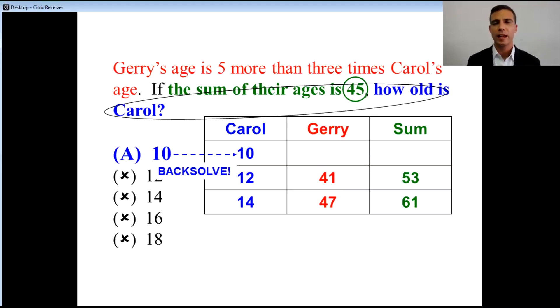If Carol is 10, and Jerry is five more than three times Carol, well, three times Carol is going to be 30. Five more than that is going to be 35. And all of a sudden, what have we got? The right answer.